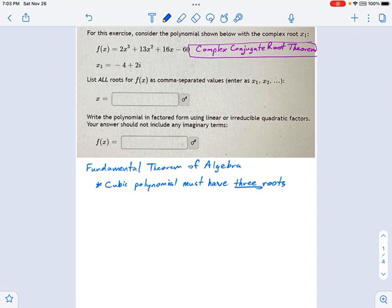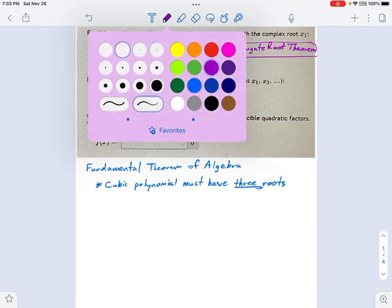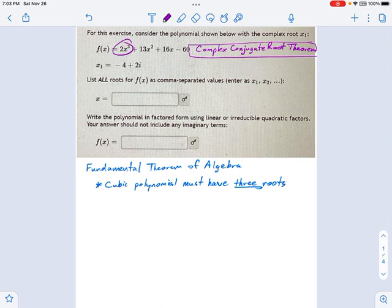We're going to factor a cubic polynomial, meaning a polynomial that has a third power as the leading degree. We're given a clue that one of the roots is negative 4 plus 2i. This is a complex root, and the polynomial we're dealing with only has real terms, no complex terms.